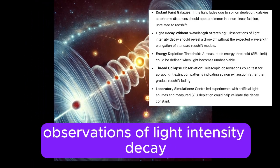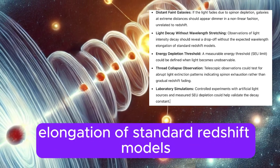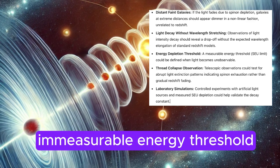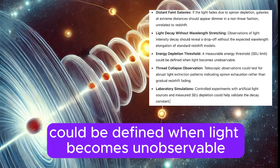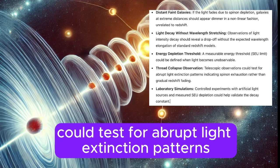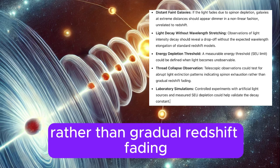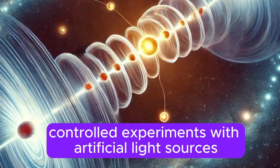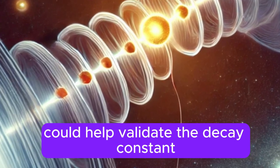Energy depletion threshold: A measurable energy threshold (SEU limit) could be defined when light becomes unobservable. Thread collapse observation: Telescopic observations could test for abrupt light extinction patterns indicating spin-on exhaustion rather than gradual redshift fading. Laboratory simulations: Controlled experiments with artificial light sources and measured SEU depletion could help validate the decay constant.